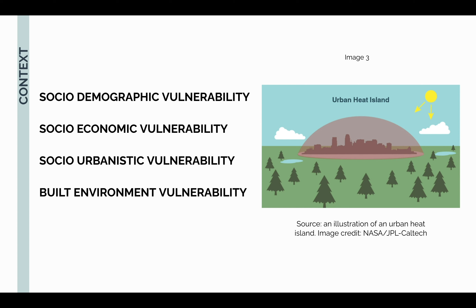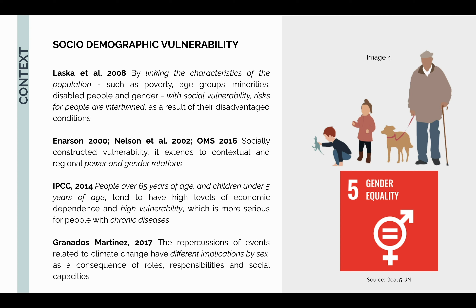We are going to talk about four different groups of indicators: social demographic vulnerability, social economic vulnerability, social urbanistic vulnerability, and vulnerability of the built environment. As for social demographic vulnerability, age and sex matter and people adapt to climate in different ways. By linking characteristics of the population such as poverty, age groups, minorities, disabled people, or gender with social vulnerability, risks for people are intertwined as a result of their disadvantaged conditions.